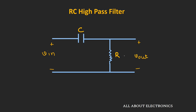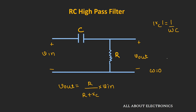Now let's understand how this circuit acts as a high pass filter. By applying the voltage divider, we can write V_out as R divided by (R + Xc) into V_in, where Xc is the reactance of the capacitor, given by 1/(ωC). At ω equal to 0, the reactance will be infinity, and V_out will be equal to 0. At ω equal to infinity, the reactance will be 0, and hence V_out will equal V_in.